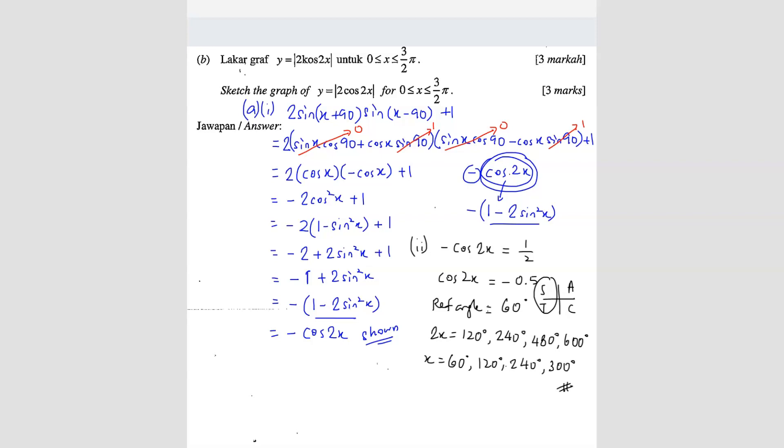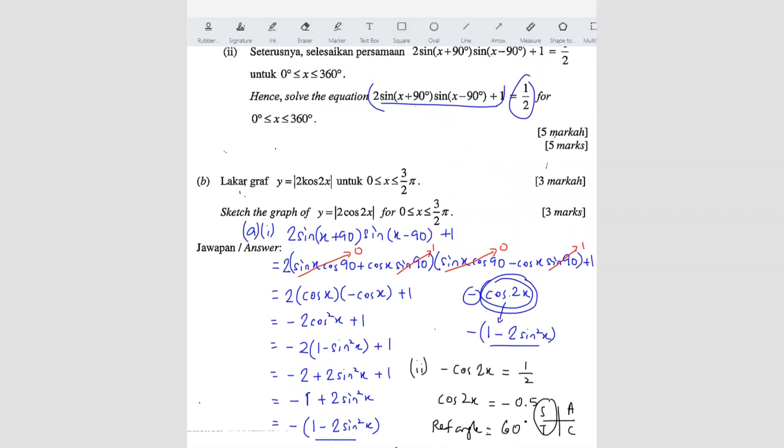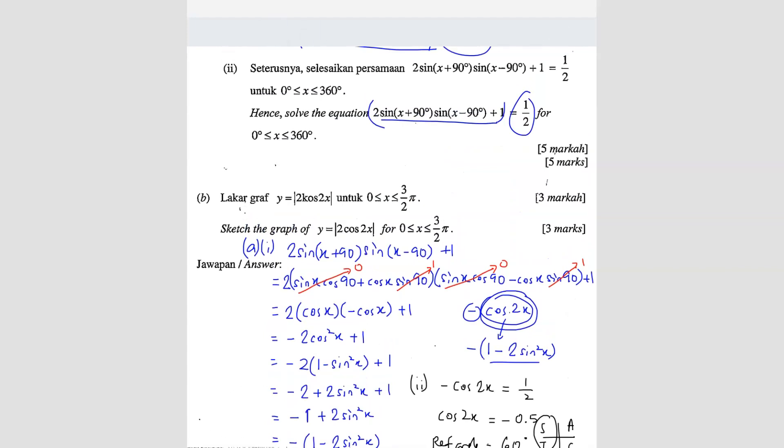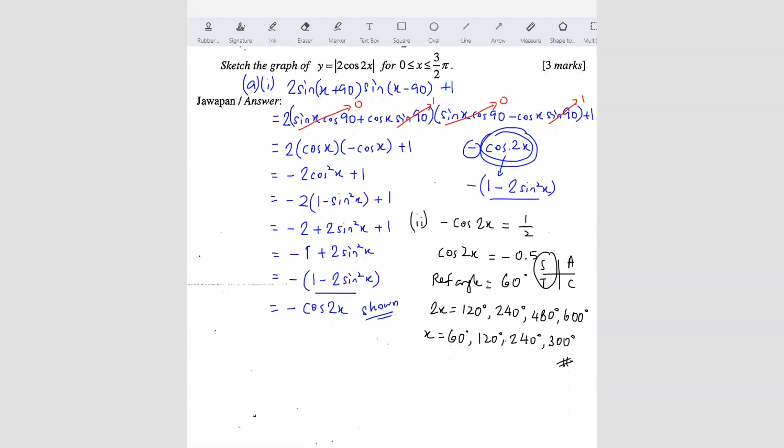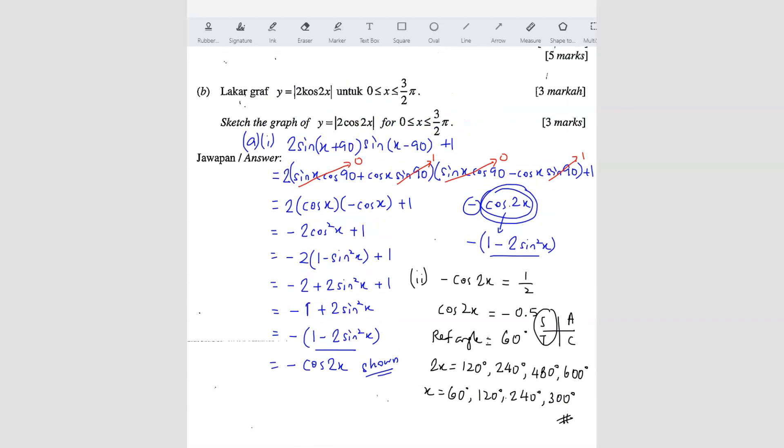So all these are your answers. That's all they ask. So they give you the range. x is between 0 to 360. So that's correct. 0 to 360. So that's the second one. Third, I mean B, question B.